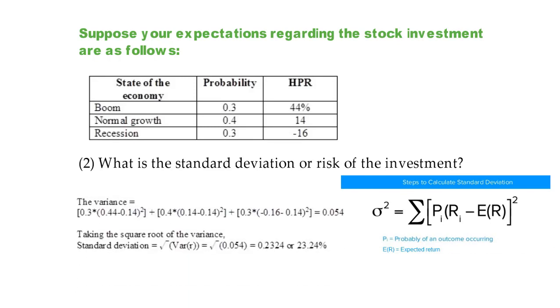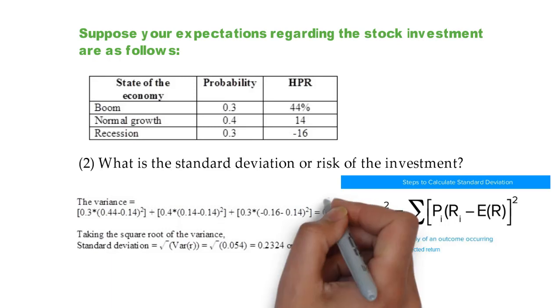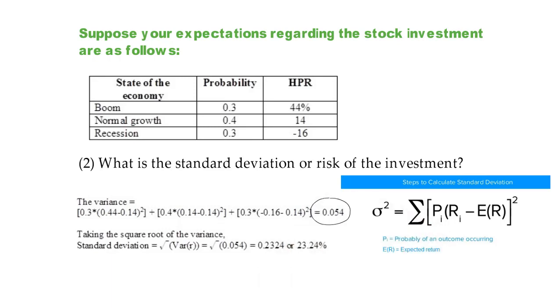So, we take each return and subtract expected mean from that return and we square it and then multiply the respective probability. And finally, we add these three terms up and we get variance of 0.054.